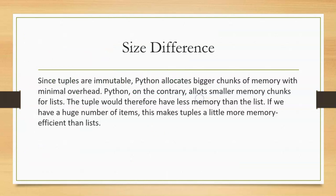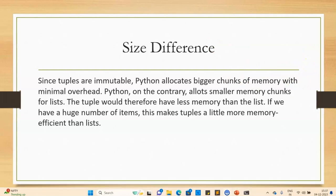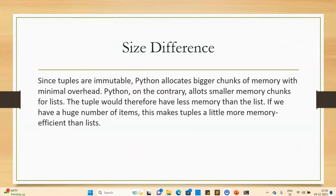There is also a size difference between a list and a tuple. Python allocates only a small amount of memory to a tuple, so the tuple size is very small. Whereas for a list, Python allocates bigger chunks of memory, so the list size is larger. In terms of memory, a tuple has less memory and a list has more. When you're working with more data, use a list; when working with less data, use a tuple. Also, if you want to modify your data, use a list rather than a tuple, because you cannot modify data in a tuple.